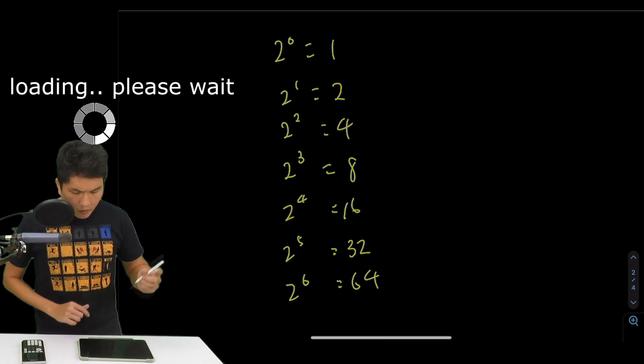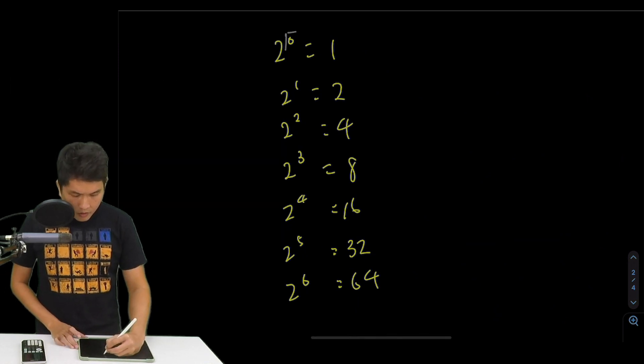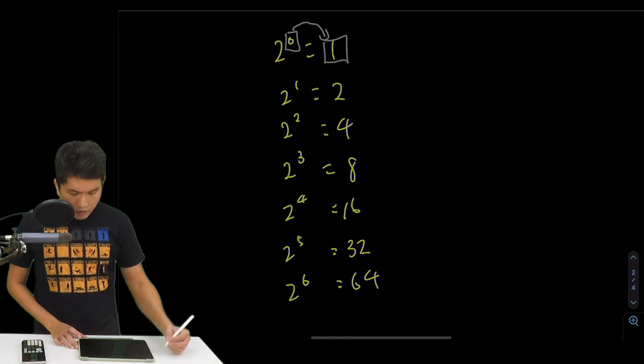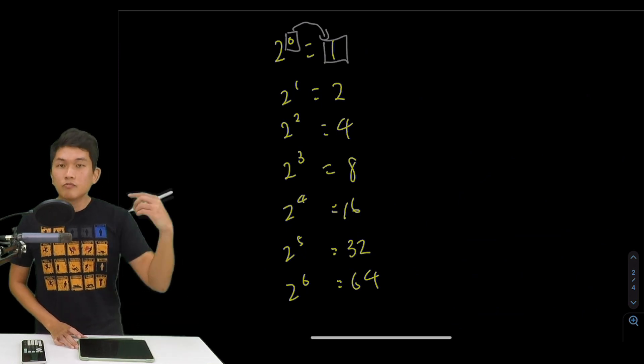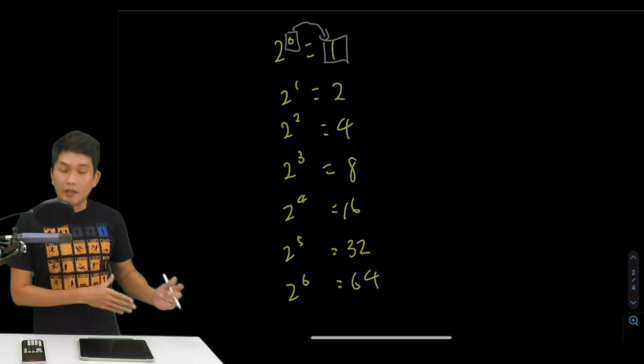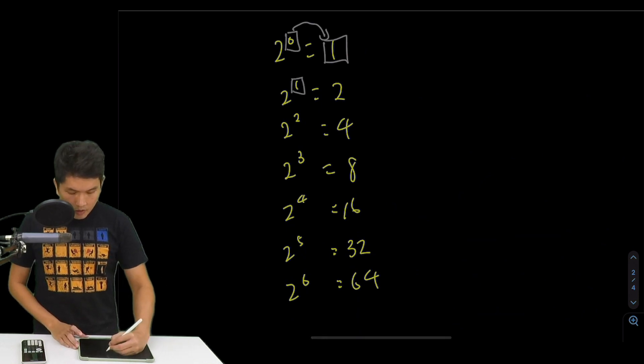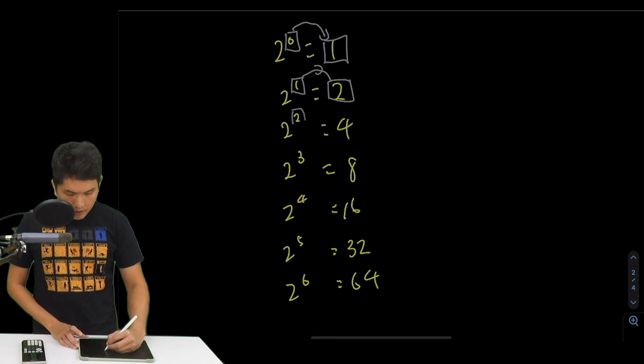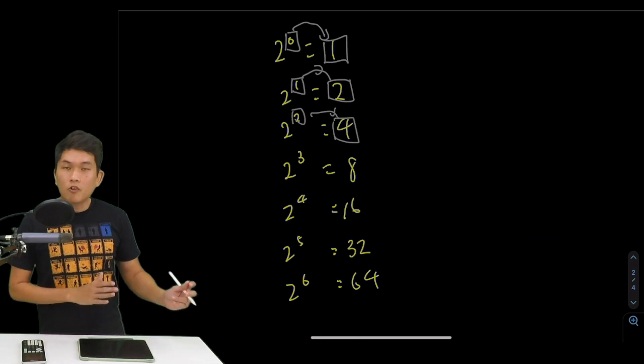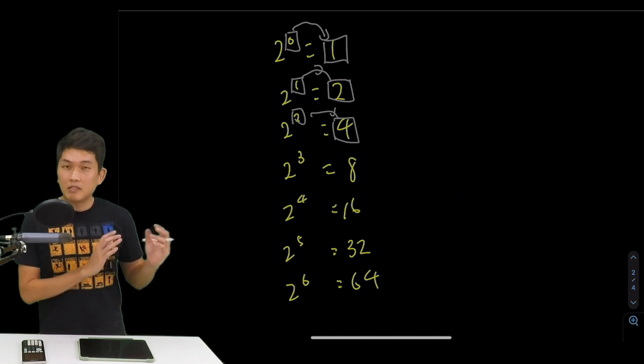So we can think of it this way. We go from the left to the right. So when I substitute 0 into base 2, I get the answer 1. When I substitute 1, I get answer 2. So the power of 2 will give me 4, the power of 3 will give me 8, the power of 4 will give me 16.